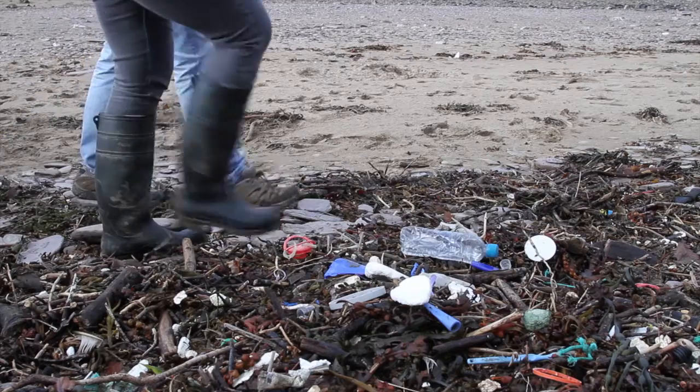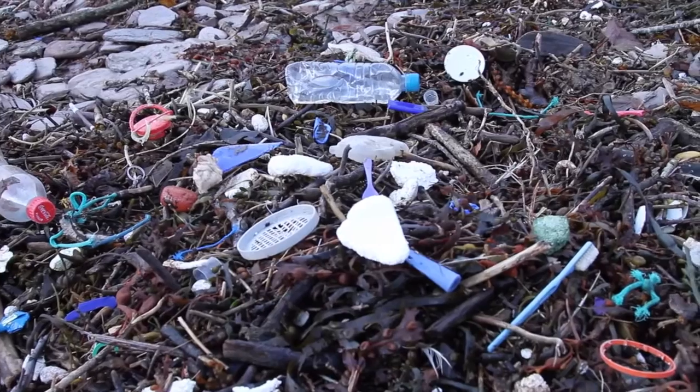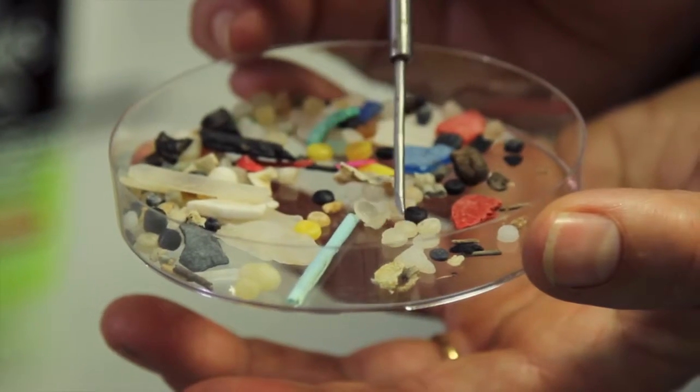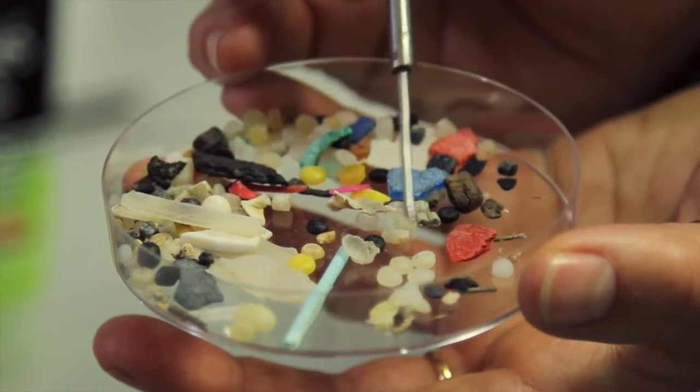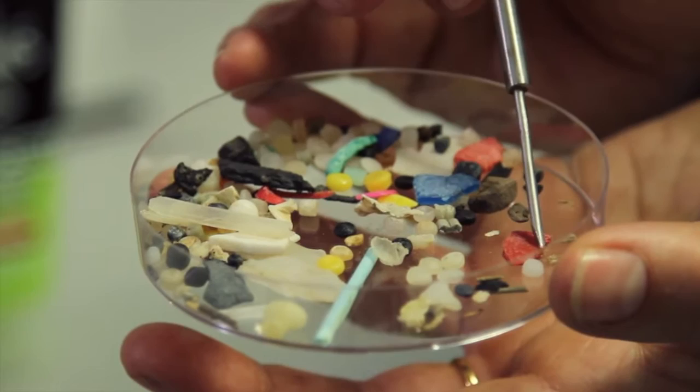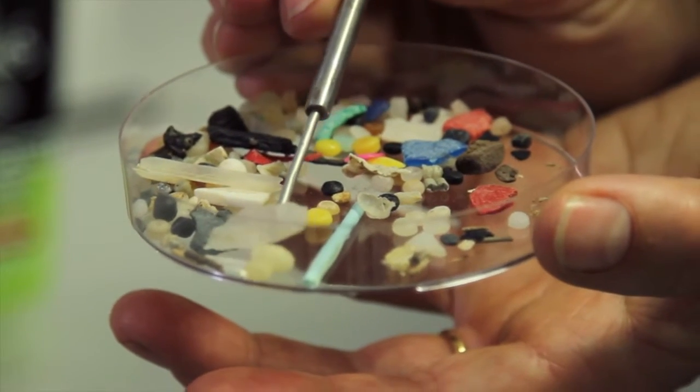But if you go to any beach anywhere in the world, what you'll probably step over is plastic waste. I can show you some examples of things that we've found. What you can see here are some of the tiny fragments of plastic, some red plastic that's probably come from a milk bottle top and some little films of plastic that have come from plastic bags.